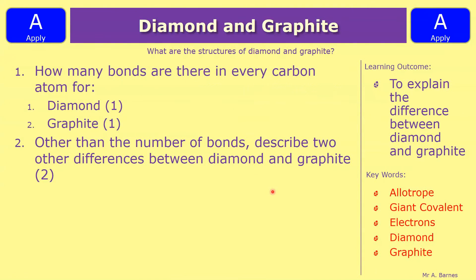Okay, let's have a look at two different questions then. So the first one should be fairly straightforward. How many bonds are there in every carbon atom for diamond and graphite? And then question two.